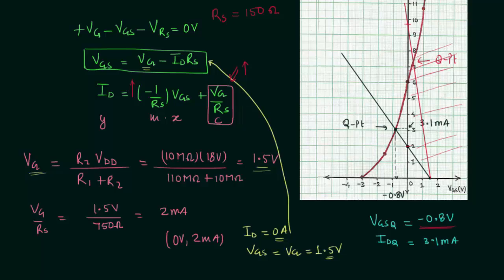That's all for this lecture. If you have any doubts you may ask in the comment section. Regarding the second load line with RS = 150Ω, you can plot it accurately yourself: calculate the intercept VG/RS to get the point on the y-axis, then join the two points to get the new load line.